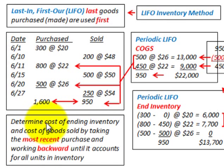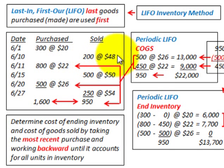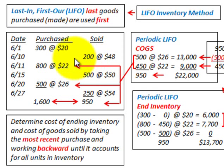With periodic LIFO, we determine the cost of the ending inventory and the cost of goods sold by taking the most recent purchases and working backwards until we account for all the units in inventory. In our example, we have purchased inventory at specific prices and sales of certain quantities — we're only concerned with cost of goods sold and the remaining ending inventory.